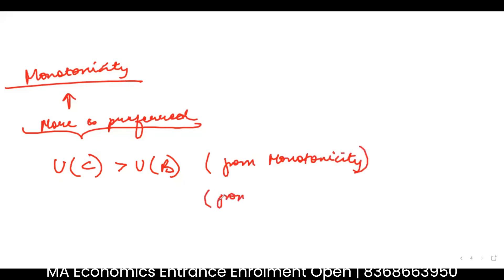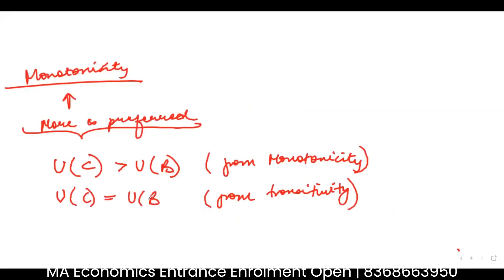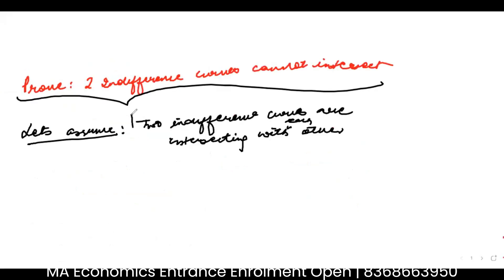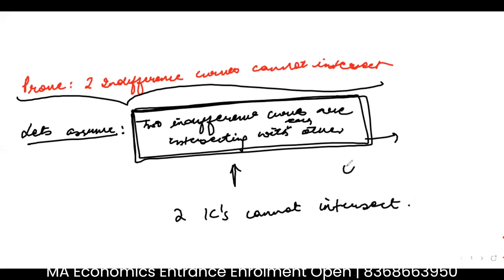But from transitivity, I know that utility from C equals utility from B. These two statements are contradictory — you cannot have two things equal and one greater than the other at the same time. Because these two things are contradictory, a contradiction has been achieved. Therefore, the initial assumption was wrong. I know from this that two indifference curves cannot intersect, because when I assumed they intersect, I reached a contradiction.